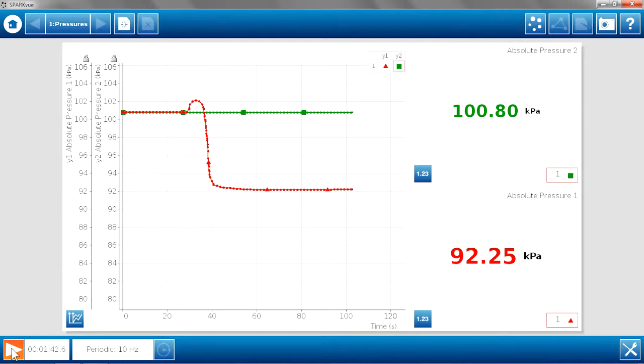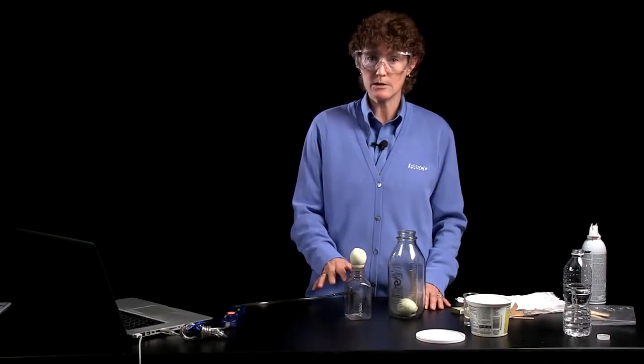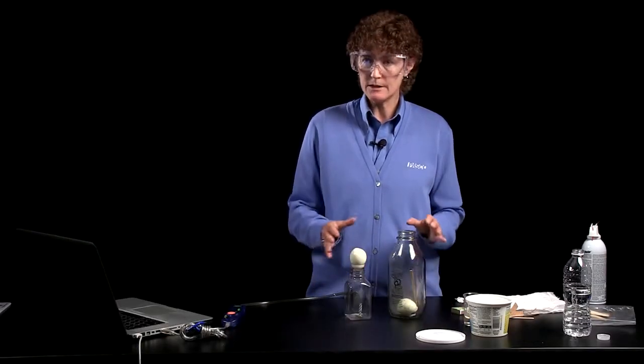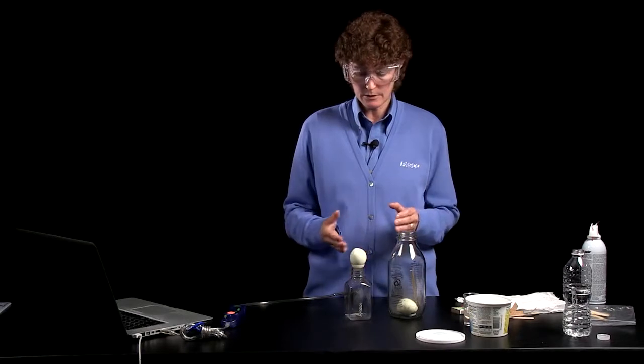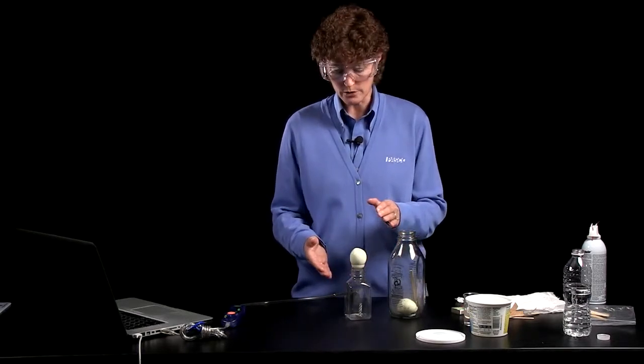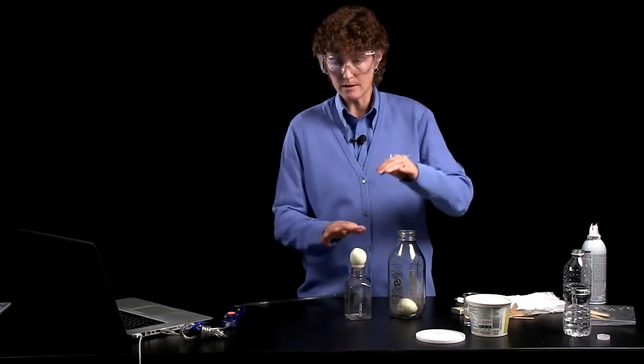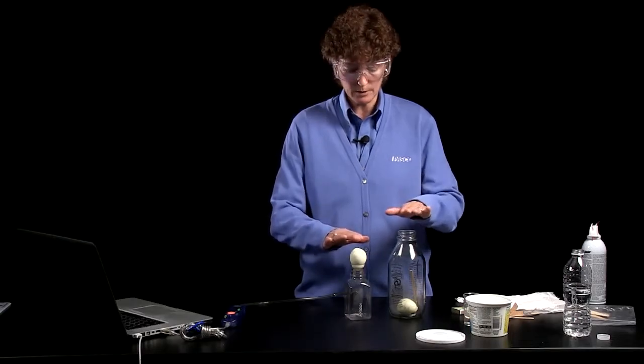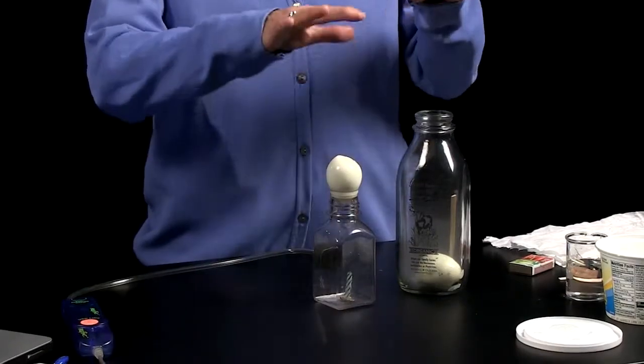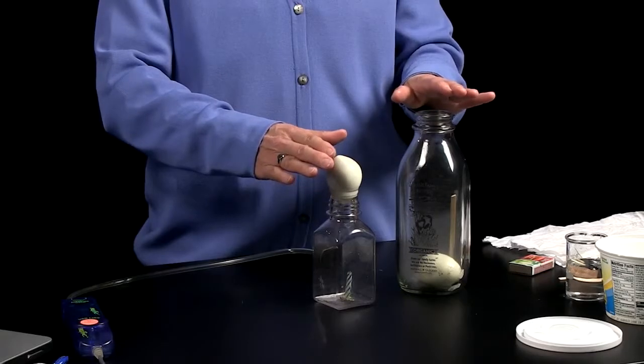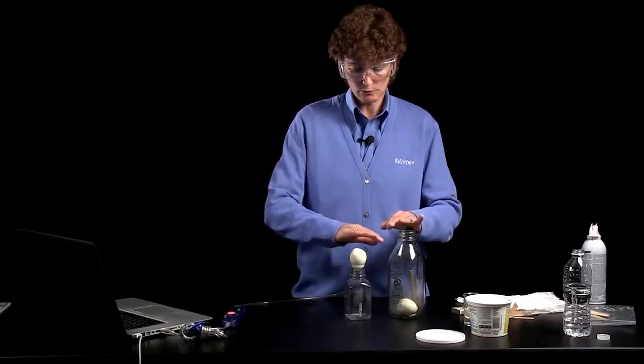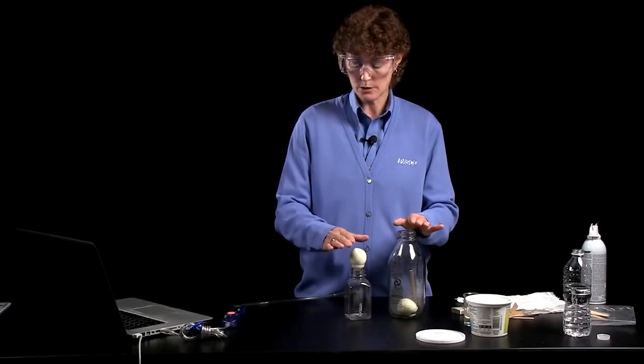Meanwhile, inside the bottle, it's about 92.2 or 92.3 kilopascals. So it's quite a bit lower pressure inside the bottle. Well, difference in pressure is difference in forces. The top of the egg on the outside is experiencing a greater force over its surface area. And of course, force divided by area is pressure.